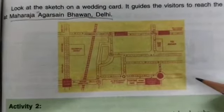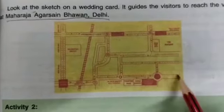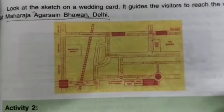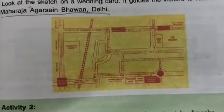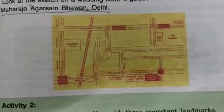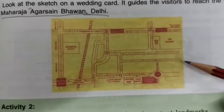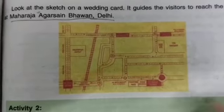The wedding venue is given as Maharaja Agrasen Bhawan. In cities it can be very difficult for people to find places, so a sketch is put on the back of the card so that people can reach there.